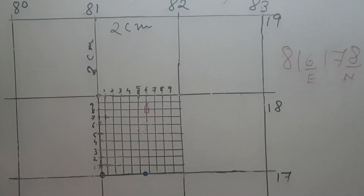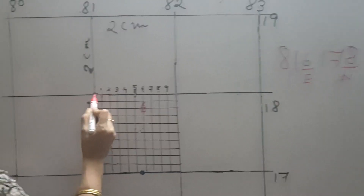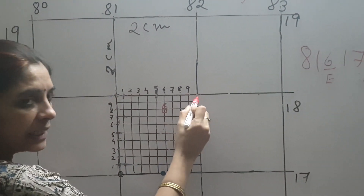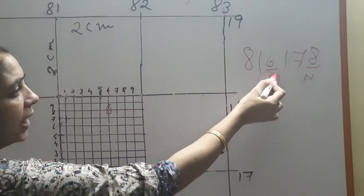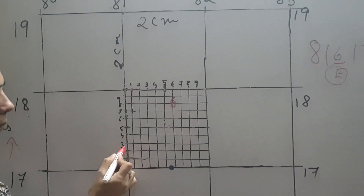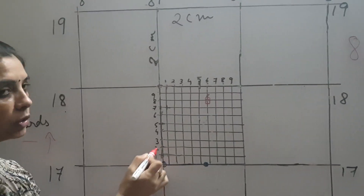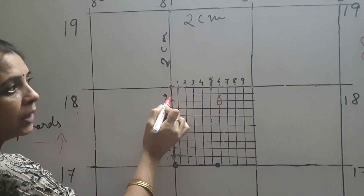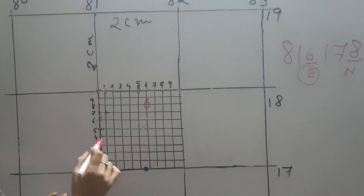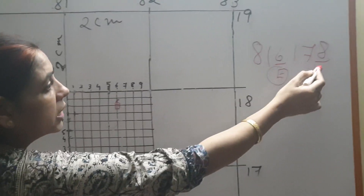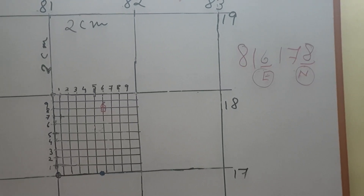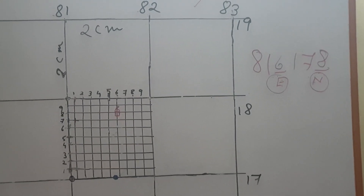So first you will always give the forward reading divisions — that is the easting — and that will be the third value. And then you will give the upward readings: 1, 2, 3, 4, 5, 6 going upward, and this will be the northing. So this is how you are going to write the 6-figure grid reference.